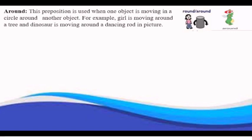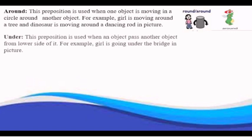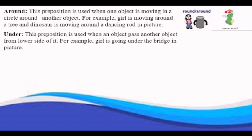Under is used when an object passes other object from lower side of it. For example, girl is going under the bridge, in picture.